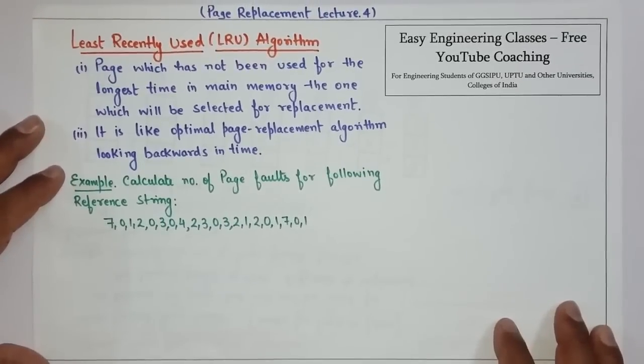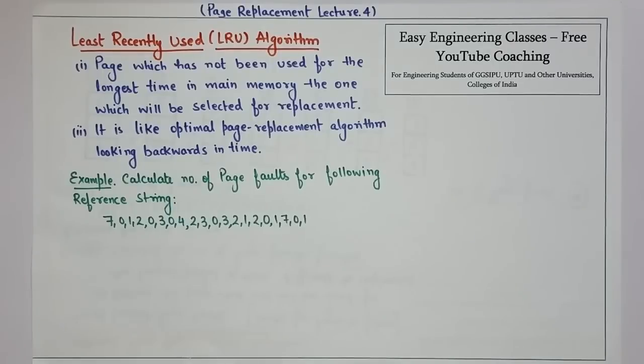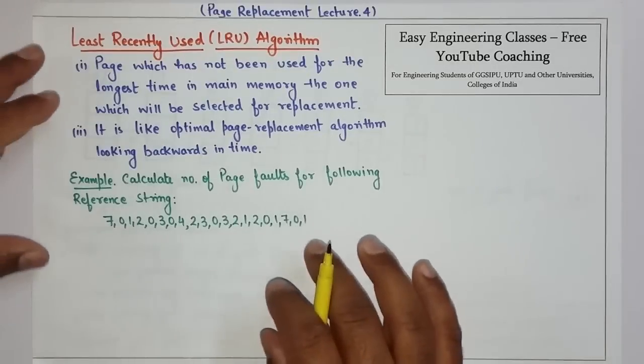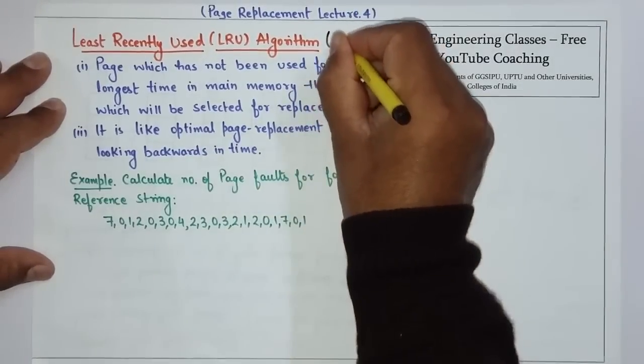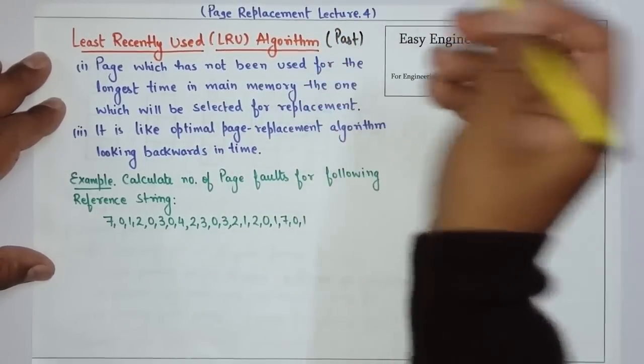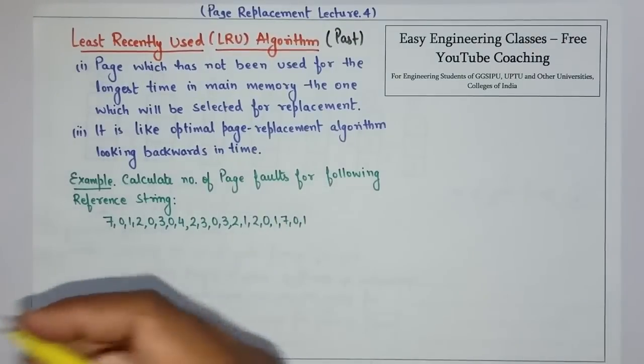Hello everyone! In today's video lecture, we are going to see the Least Recently Used algorithm, which is also known as LRU algorithm. In this, the page which has not been used for the longest time in main memory will be selected for replacement. In this case, we have seen in the optimal case, in the future, the LRU is in the past, which is the least recently used.